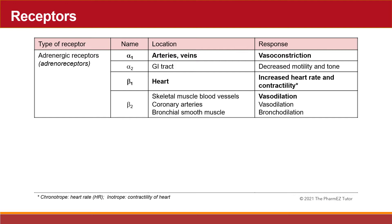The second most important type of adrenergic receptors are the beta receptors, and there are two types: beta-1 and beta-2. Beta-1 receptors are located in the heart and, when activated, increase heart rate and myocardial contractility — chronotropic and inotropic effects. Beta-2 receptors are located in the skeletal muscle blood vessels, coronary arteries, and bronchial smooth muscle. When activated, they produce vasodilation in the peripheral arteries and bronchodilation in the lungs.